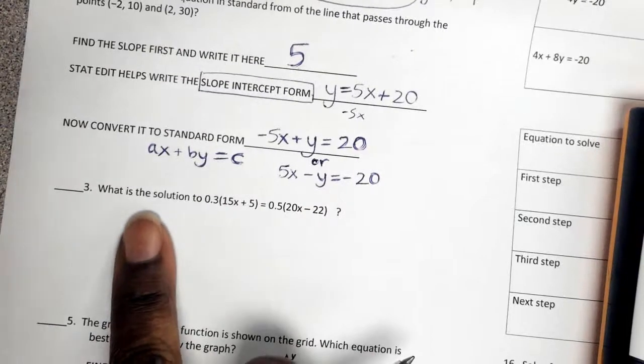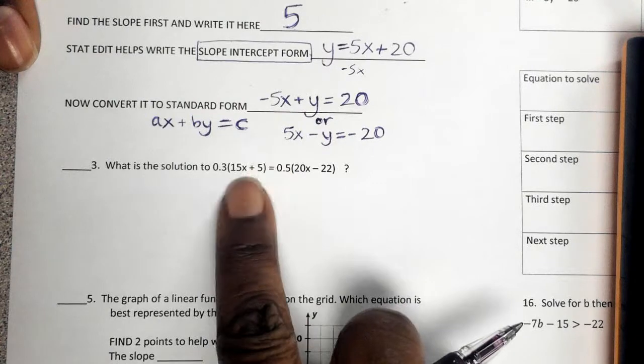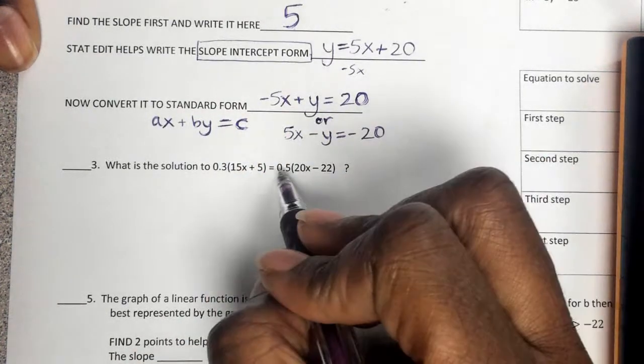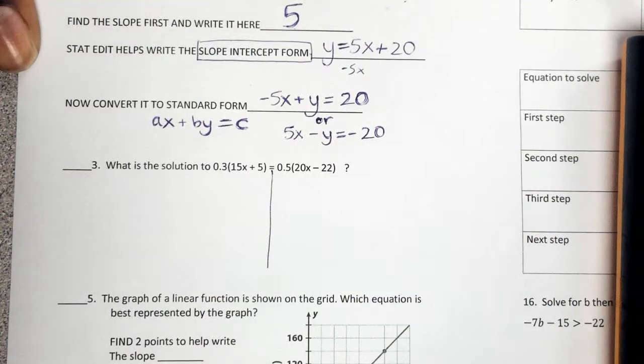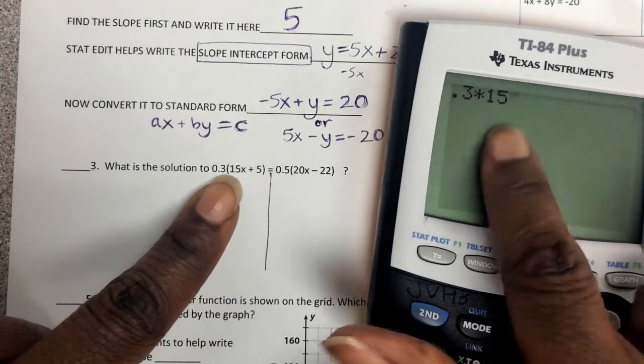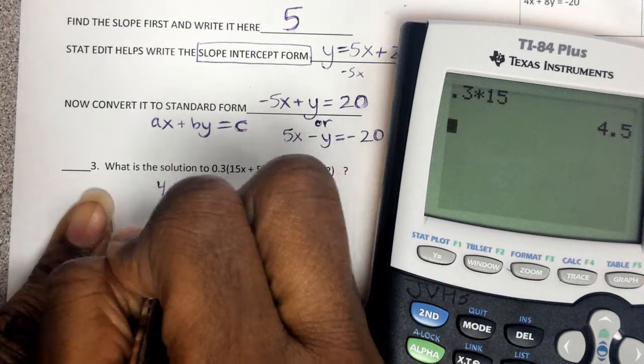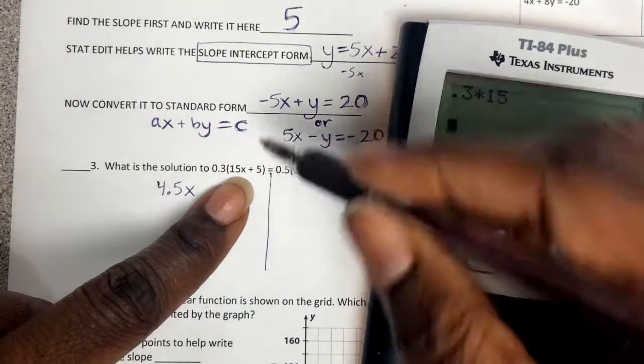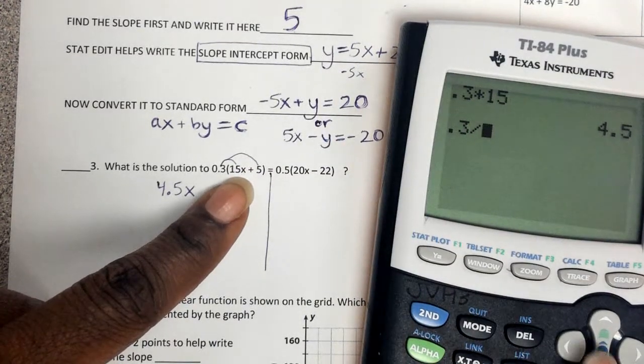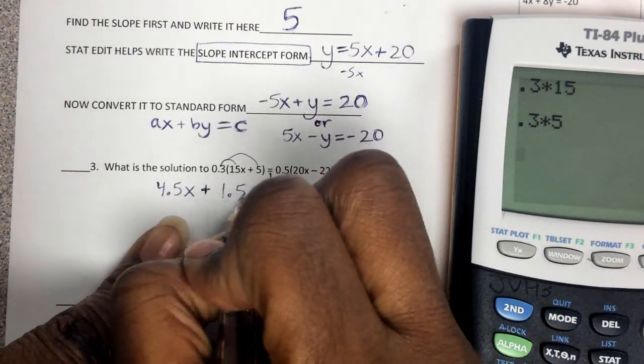This one says, what is the solution to this equation right here? Now notice this one, it has parentheses, and it only has one variable. So this is the case where I need to first distribute to get rid of my parentheses. So I've got 0.3 times 15x, but don't put the x in there. That gives me 4.5x. And then I'm multiplying this times this, and now 0.3 times 5. And everything's positive, so I don't have to worry about nothing there.